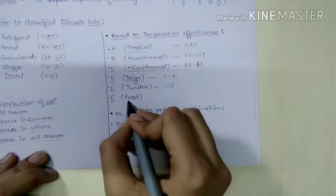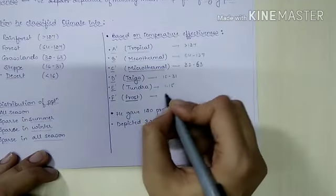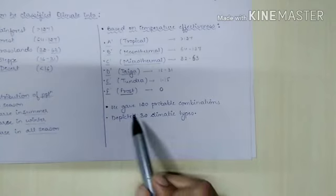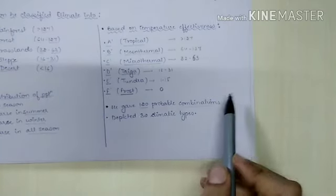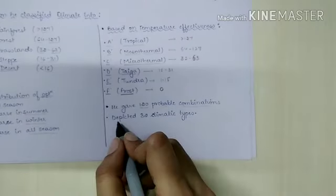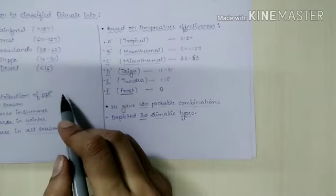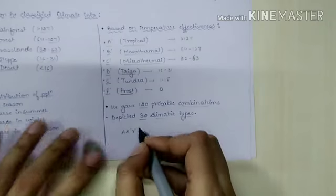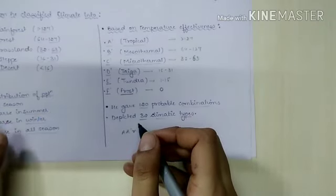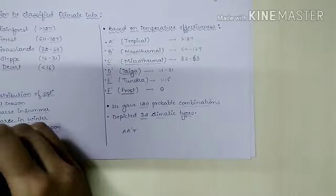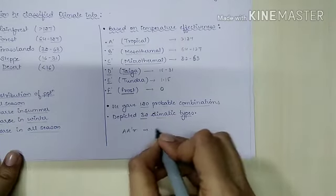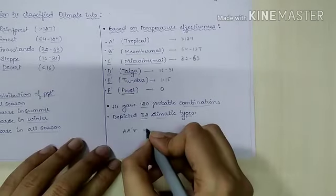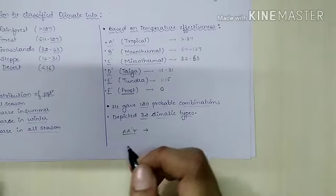On these bases, Thornthwaite gave 120 probable combinations, but in reality he was able to find only 32 climatic types. These 32 climatic types were combinations such as A-A′-r, meaning wet climate (rainforest), tropical province, with rainfall in all seasons — representing tropical wet climate with adequate rainfall for the whole year. Likewise he gave 32 climatic types.